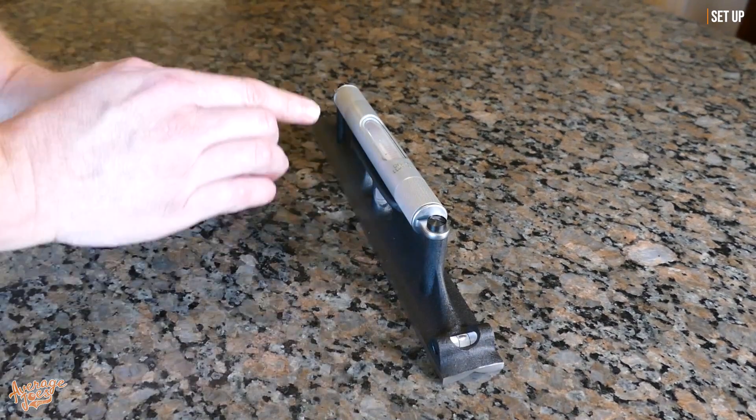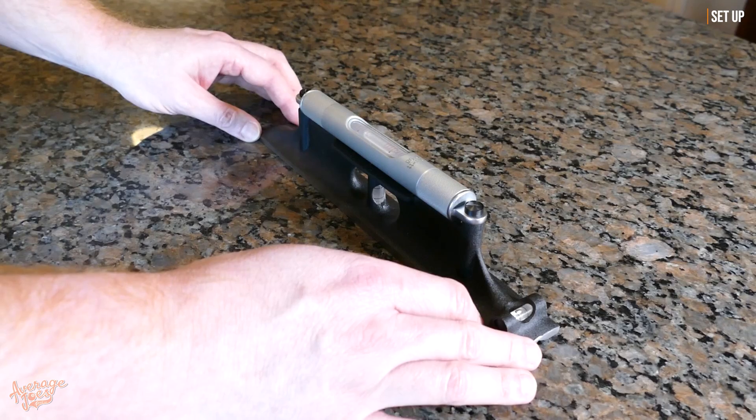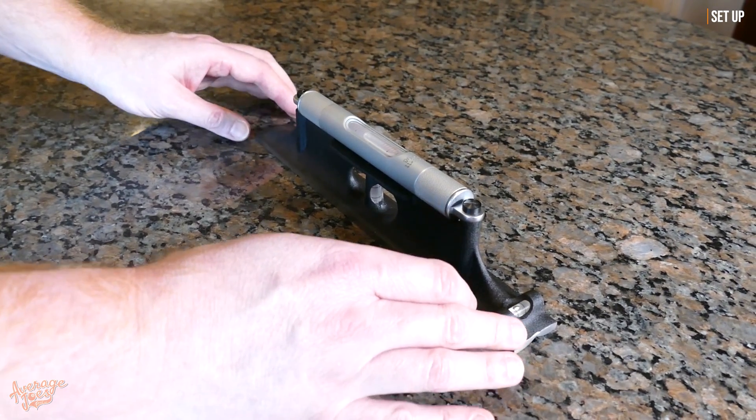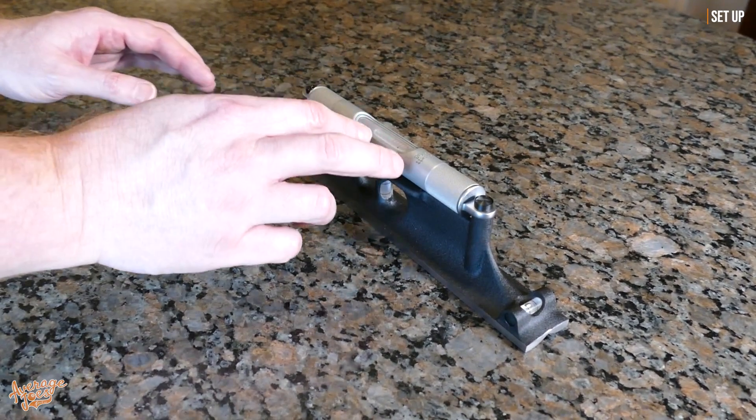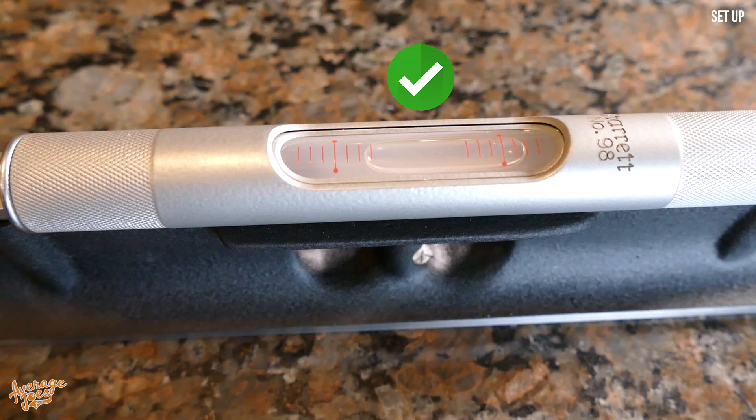If it is, if you spin it around sometimes it will change the level a little bit. So you want to get it to a position where you have the bubble somewhere in the gauge. You don't want the bubble off the end of the level. As long as you're in the center there like we are here, that's perfect.